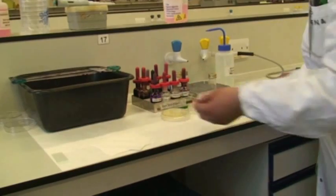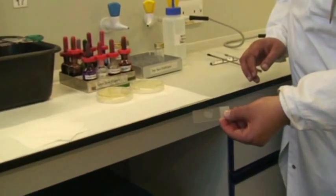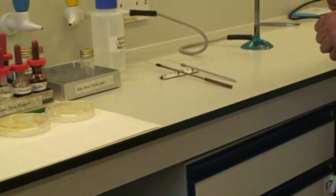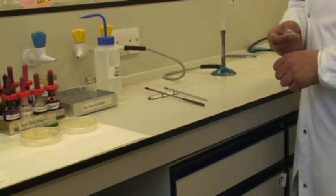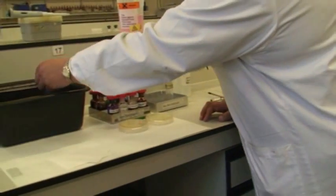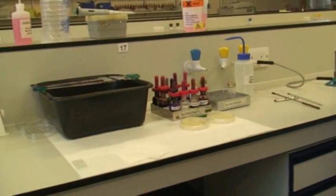And again, the same with your second slide, should be nicely air dry, no moisture on there. Heat fixing it in the Bunsen flame for a couple of seconds, until it's a bit too hot to put on the back of your hands. And then that can go onto the staining rack, ready for staining.